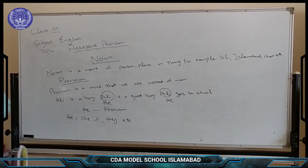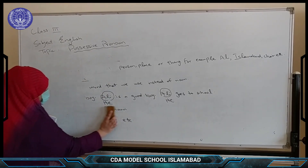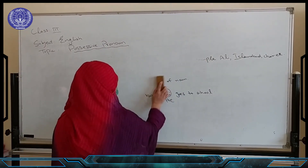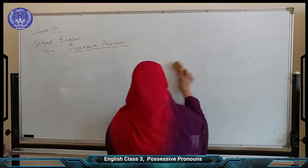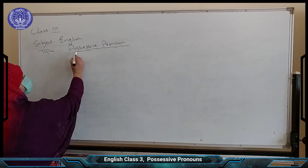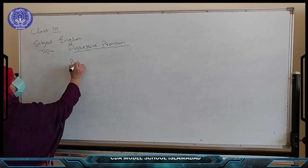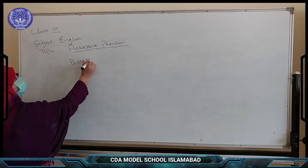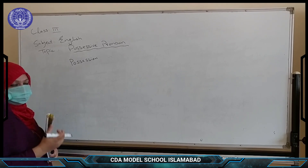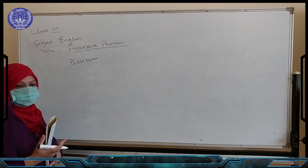Now we come up to the topic that is Possessive Pronoun. What is the meaning of possessive pronoun? What is the meaning of possessive? Possessive means possession — that shows your possession. And what is the meaning of possession? Jo cheez aapki malqiyat ho, jo cheez aapke paas ho, ya kisi dusre ke paas ho. Possessive pronoun means a pronoun that shows the possession.